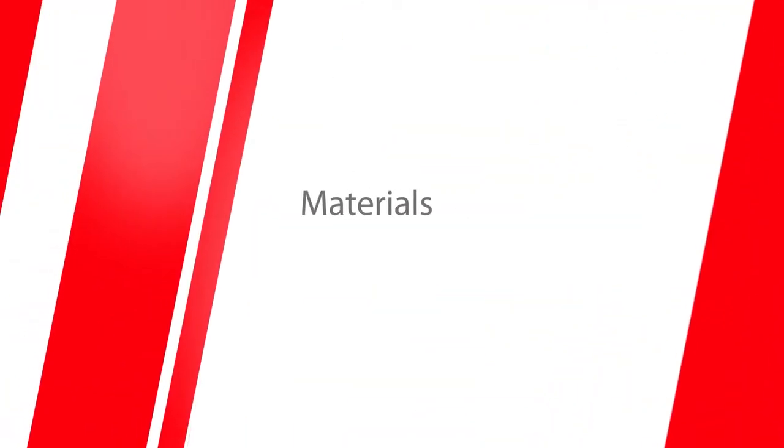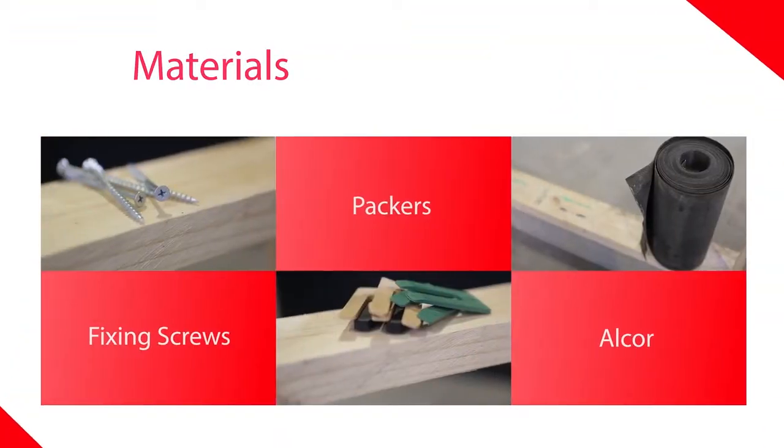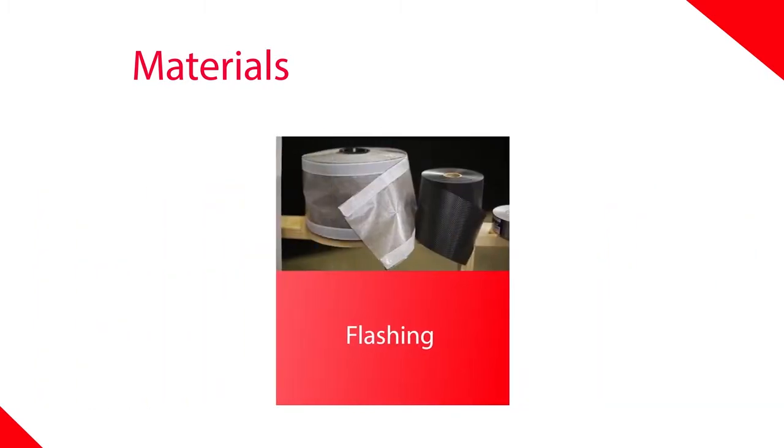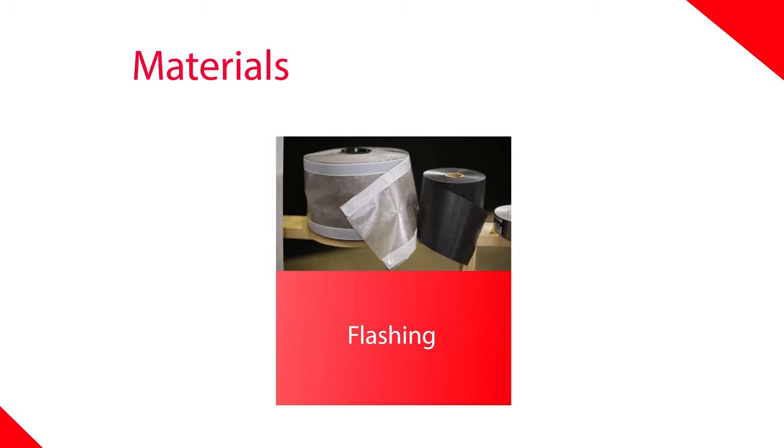There are a few things we'll need: fixing screws, either stainless steel or galvanised; packers like the ones shown here, or you may prefer to use timber wedges; Alcor for our sealed tray; and we'll also need some flashing. There are a number of different types.